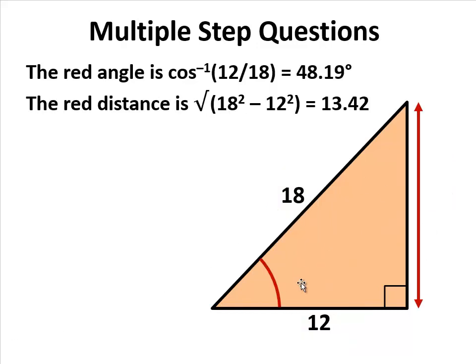And we can solve for that triangle. I find the angle, inverse cos, gives me an angle of 48.19. Short side Pythagoras: 18 squared minus 12 squared, square rooted, is 13.42. So I have solved for the larger triangle.